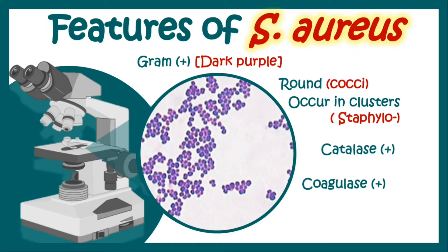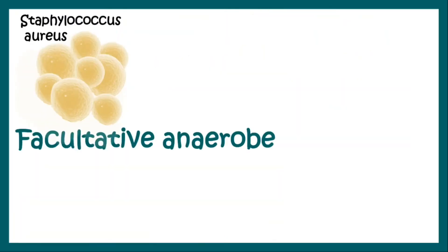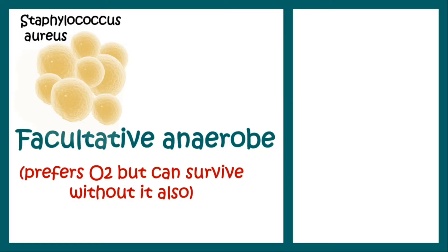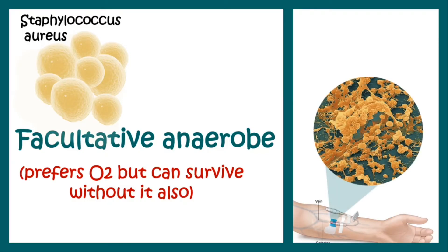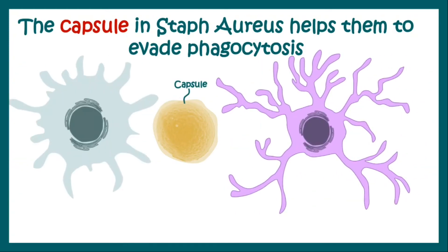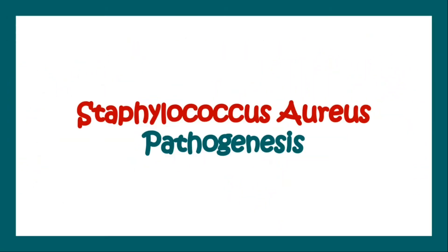Under the microscope, Staphylococci originally look like this. Apart from that, Staphylococcus aureus is a facultative anaerobic, meaning it prefers oxygen but can survive without it. It has a unique property of forming a biofilm, which is responsible for causing IV cannula-associated Staphylococcal infections. The capsule that Staphylococcus aureus produces helps it to evade phagocytosis.